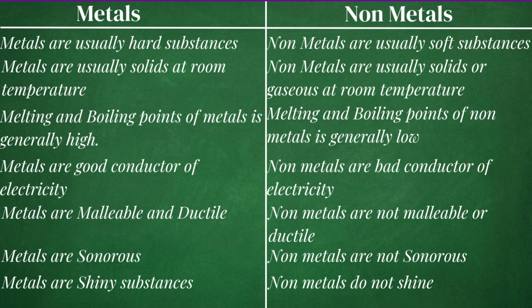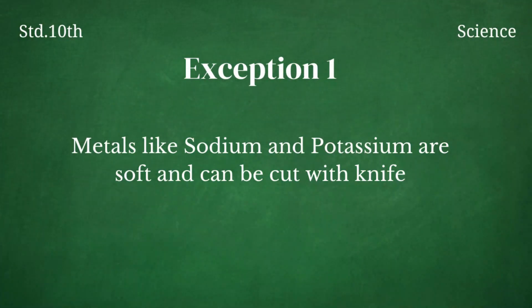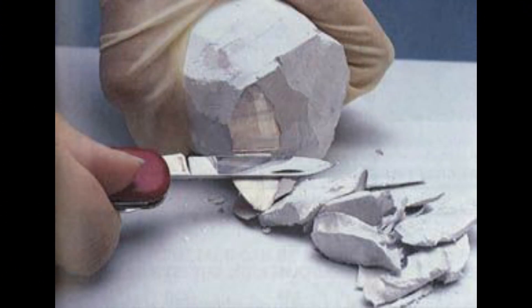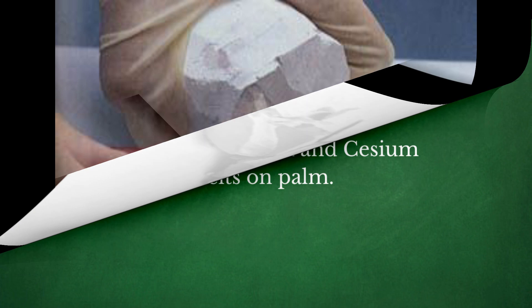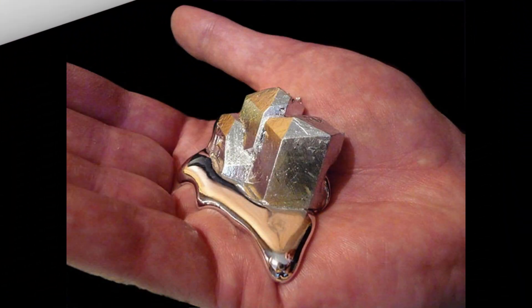Now, as I said, there are few exceptional cases. As it said that metals are hard substances, but metals like sodium and potassium are very soft. They are so soft that we can cut these metals with knife. Melting and boiling point of metals is usually high, but the metals like gallium and cesium melt even on our palm, means their melting point is quite low.